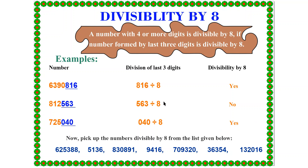It is a very easy method. Now you have to do some exercise. Pick the numbers divisible by 8 from the list given below and identify which numbers are divisible by 8 and which are not.